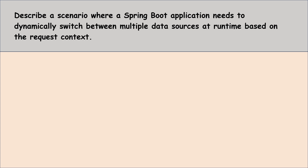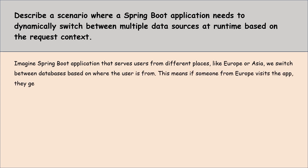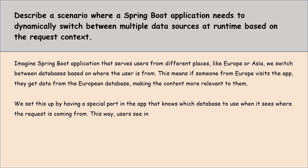Moving to the next question: describe a scenario where a Spring Boot application needs to dynamically switch between multiple data sources at runtime based on the request context. Imagine a Spring Boot application that serves users from different places like Europe or Asia. We switch between databases based on where the user is from — if someone from Europe visits the app, they get data from the European database. We set this up by having a special routing part in the application that knows which database to use based on where the request is coming from.